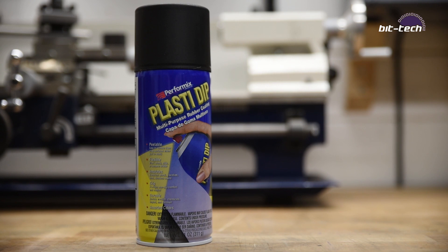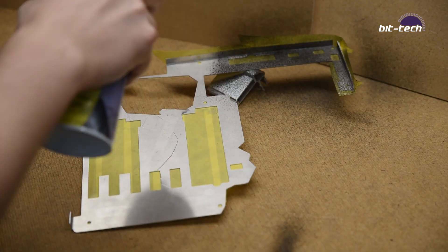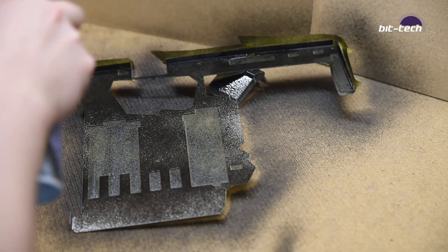Edge is bent, time to plasti dip the back. This makes this side non-conductive for a bit of added safety to prevent shorting, given that this is a metal part.